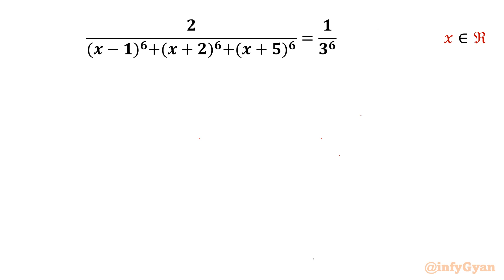Welcome back to Infigian friends. Today in this video we are going to solve one very interesting rational equation challenge. It is 2 over (x minus 1) raised to the power 6, plus (x plus 2) raised to the power 6, plus (x plus 5) raised to the power 6, and the RHS is 1 over 3 to the power 6. We have to find out real values of x. So let's get started.